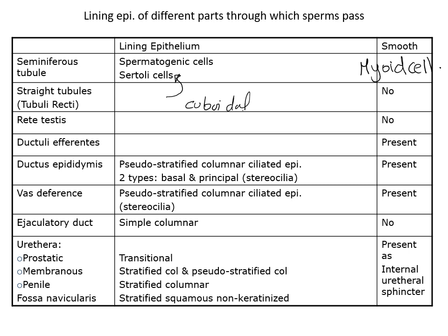Summary of duct linings: the rete testis is lined by cuboidal cells; the ductus efferentes is lined by columnar cells; the epididymis and vas deferens are both lined by pseudostratified epithelium. From the ductus efferentes to the vas deferens all have smooth muscle fibers, whereas the ejaculatory duct does not have smooth muscle fibers. The last part is the urethra.